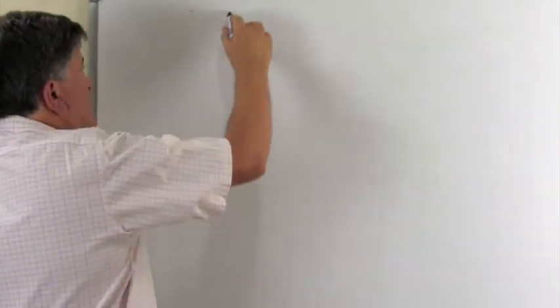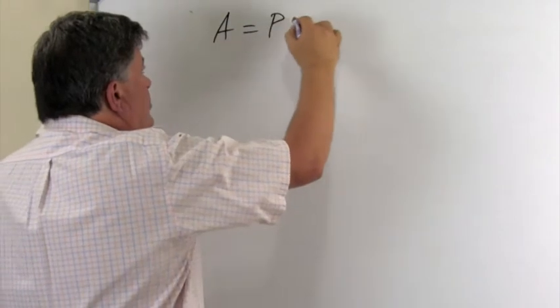Like in simple interest, we use a formula to calculate the simple interest and we're going to use a formula to calculate compound interest. So it's very important that you remember which one is which. Compound interest, the formula that we use is A equal to P.